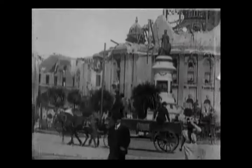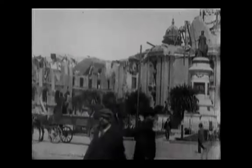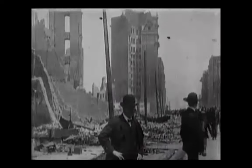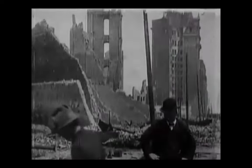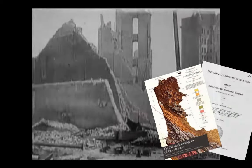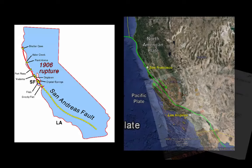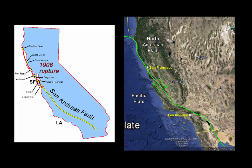A magnitude 7.8 earthquake struck San Francisco early on the morning of April 18, 1906. The event marked the first time that the consequences of a major U.S. natural disaster were recorded on film. A subsequent report demonstrated that the earthquake occurred on the northern half of a single continuous structure that we now know as the San Andreas Fault.